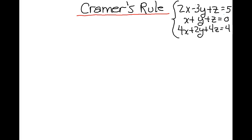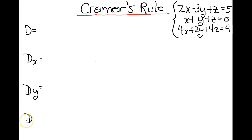This is our second Kramer's Rule video. In this video we're going to solve a system of three equations and three unknowns using Kramer's Rule. Just like for two equations and two unknowns, we have determinants to figure out: the determinant of our coefficient matrix, the determinant sub x, the determinant sub y, and lastly, because we're working with three equations and three unknowns, we have the determinant sub z.